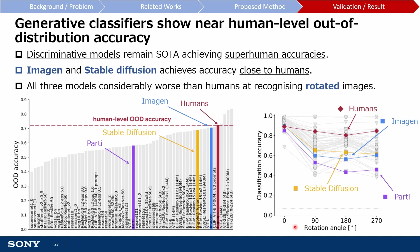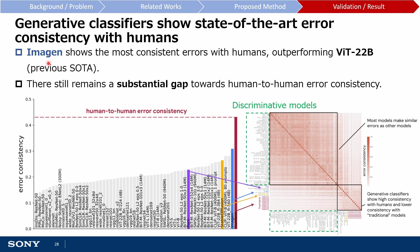Now let's look at error consistency. Generative classifiers, specifically Imagen, achieved state-of-the-art error consistency with humans, outperforming previous state-of-the-art discriminative models. However, there still remains a large gap between human-to-human error consistency and AI-to-human error consistency. Discriminative models have high error consistency with one another, while generative models appear to display higher error consistency with humans rather than with discriminative models.